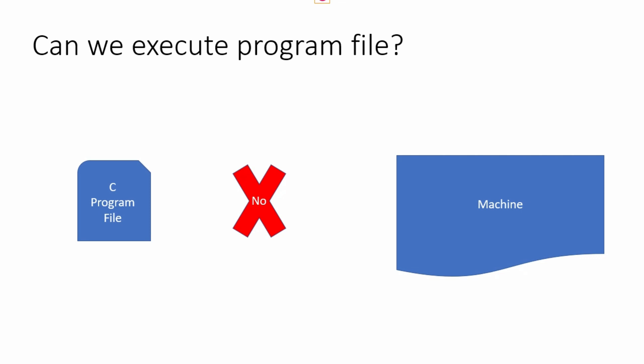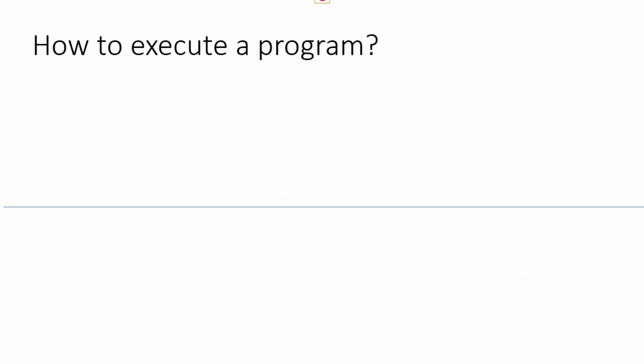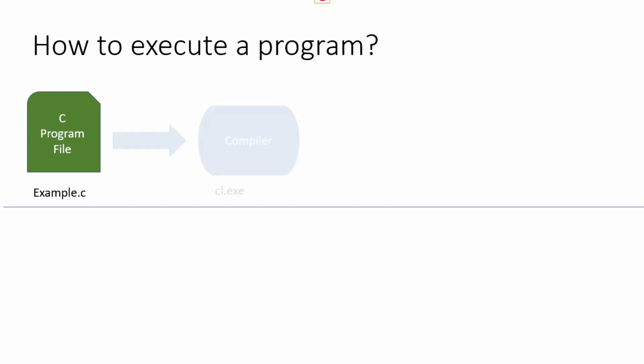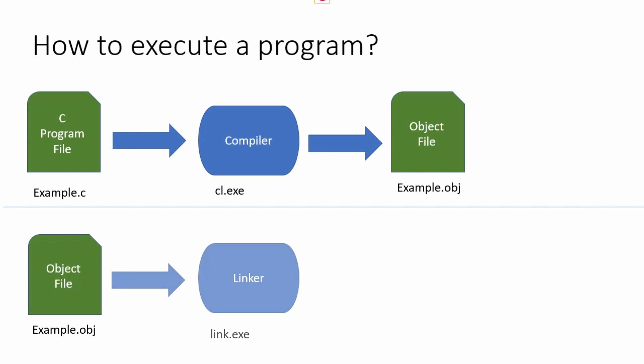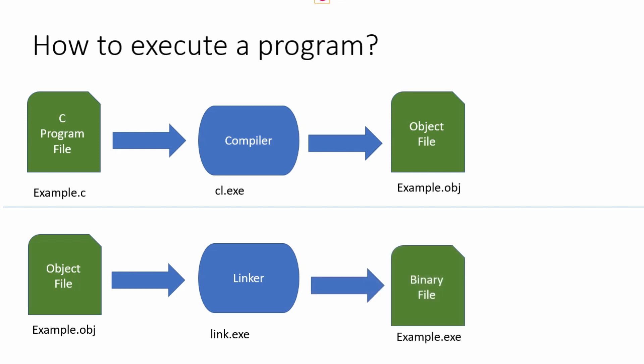For that we need to understand the compilation and linking model. Let's assume we write a C program and name the file example.c. We submit our program to a utility called a compiler. That utility will analyze our program and translate our code into something called an object file or object code. For example.c, an object file called example.obj will be generated.